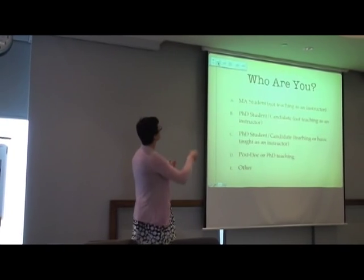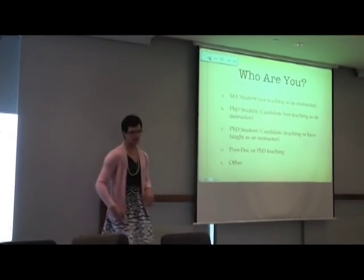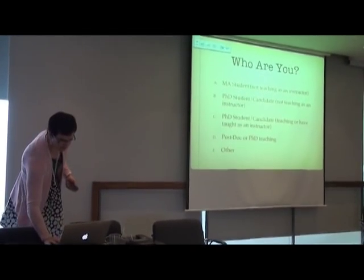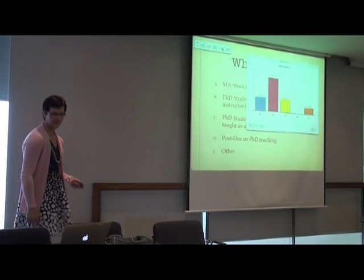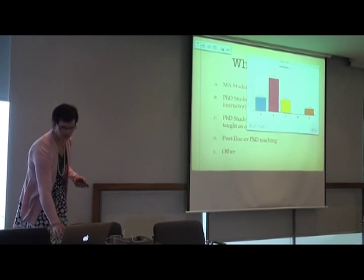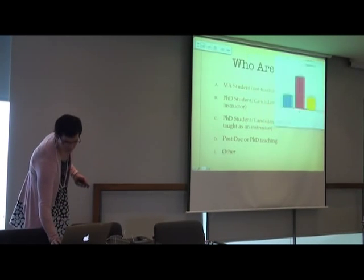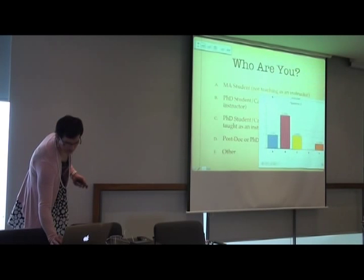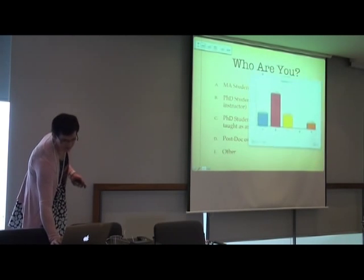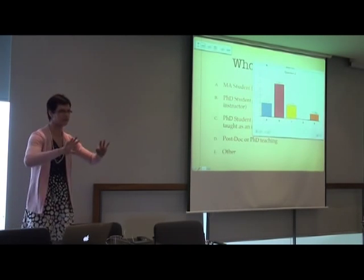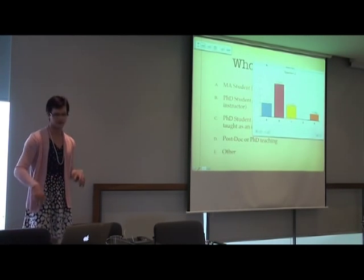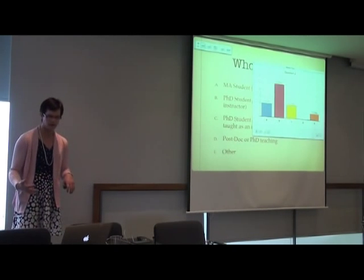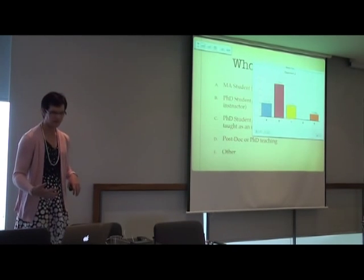Basically what I do is I open the poll by pressing this button, I wait until you vote, then I stop it, and then I get to show you the handy-dandy graph. So two of you are MA students, five of you are PhD candidates who have not taught or are not teaching right now, two of you are PhD students who have taught, and one's an other.